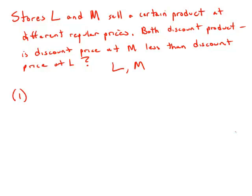Statement number one tells us that at store L the discounted price is 10% less than the regular price. So a decrease of 10% means it's 90% of the regular price or 0.9L. That's the discounted price. And at store M the discounted price is 15% off, so that is 85% of the regular price or 0.85M.